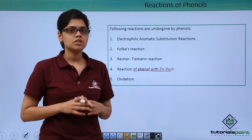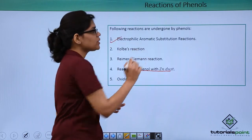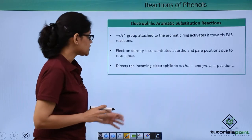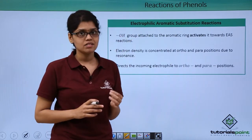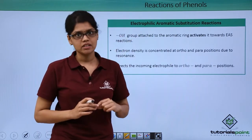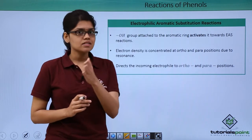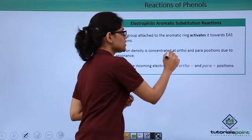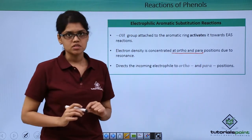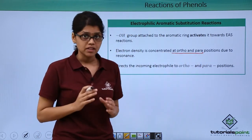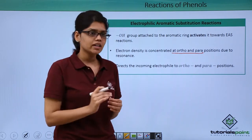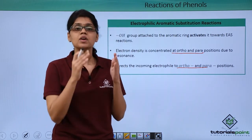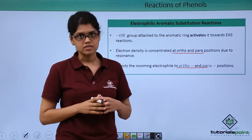In this particular video, we are going to discuss mainly electrophilic aromatic substitution reactions undergone by phenols. As we know, the OH group attached to the phenol ring is highly activating in nature. If you draw the resonance structures of phenol, you can easily see that the electron density is concentrated at ortho and para positions due to resonance. That means phenol will direct the incoming electrophile towards ortho and para positions, giving ortho and para substituted products.